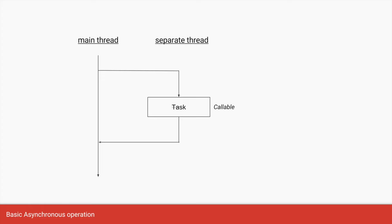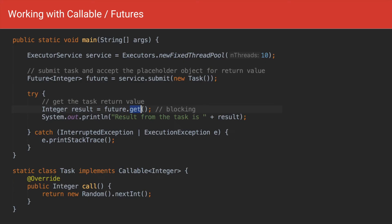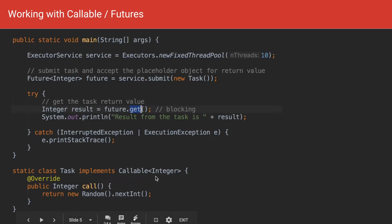We typically do this using ExecutorService. Here we have an ExecutorService which is of the type fixed thread pool. The thread count is 10, and we say submit a new task. This new task is nothing but an instance of Callable which returns the type Integer. The method does nothing special — it is just returning a random integer.